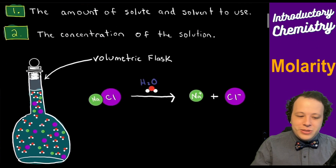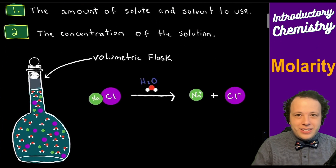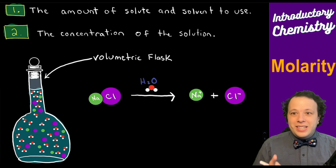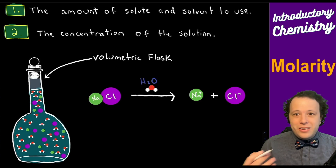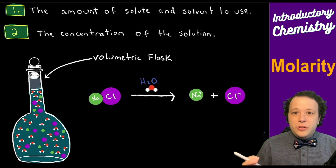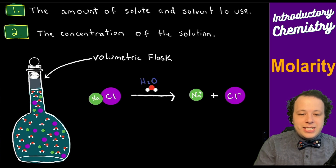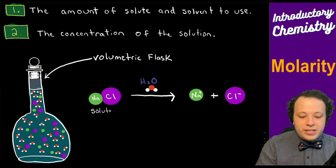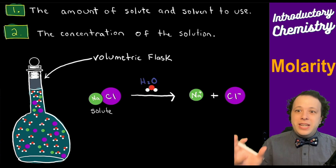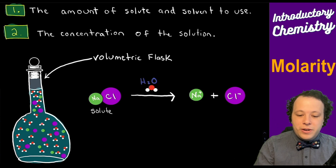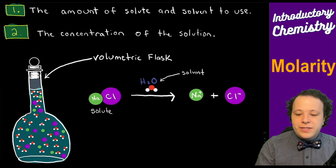So if you're in lab and you're trying to make a solution, how do you exactly do that? Generally, you are mixing different ingredients. For example, if we take a solute such as common sodium chloride, or table salt, and we throw that into water — that water is labeled as the solvent.